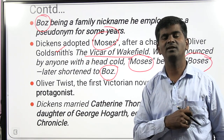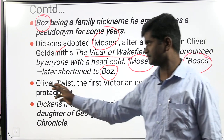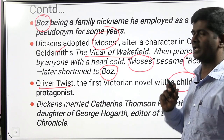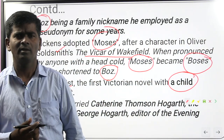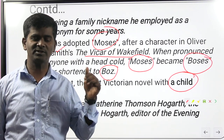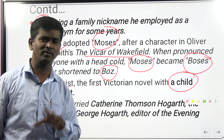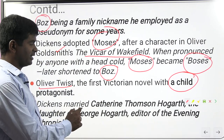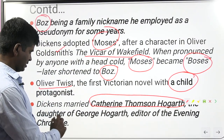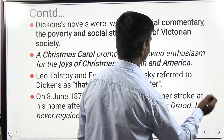Oliver Twist is the first novel in which a child became the protagonist — for the first time in the history of the English novel, a child (Oliver) was the central character. Dickens married Catherine Thompson Hogarth. She was the daughter of George Hogarth, who was a popular writer of the Evening Chronicle.